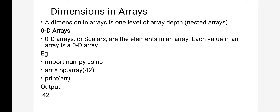For a zero-dimensional array, here I have given an example. I import numpy as np. The array object contains only a single element, 42. There is no particular row, so such an array is called a zero-dimensional array.